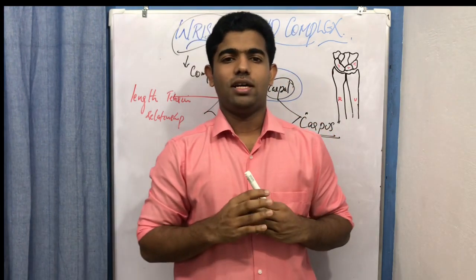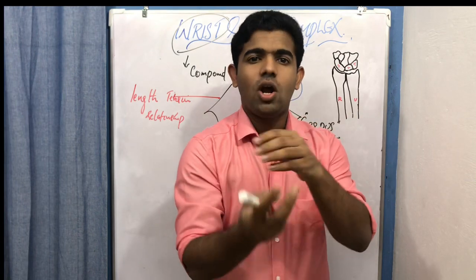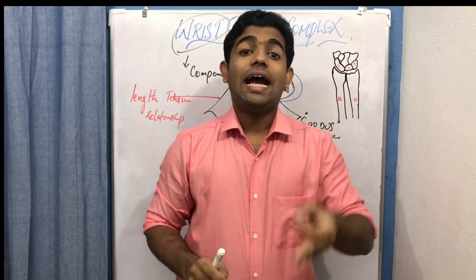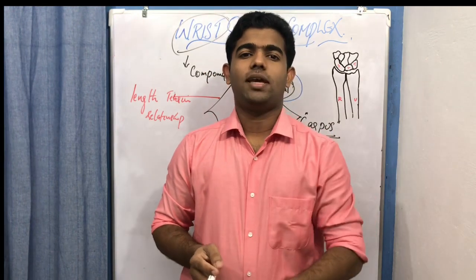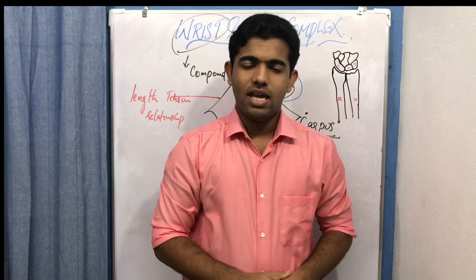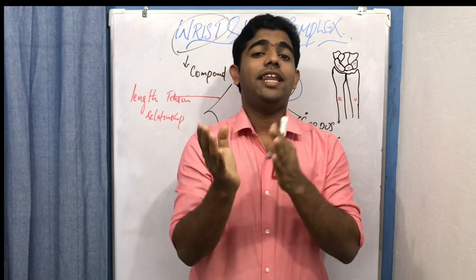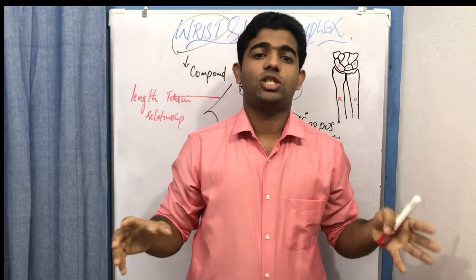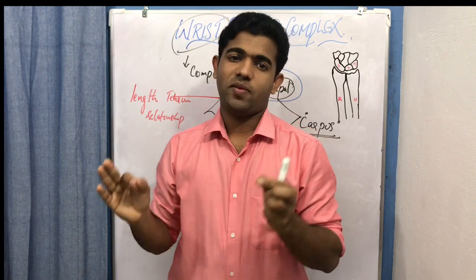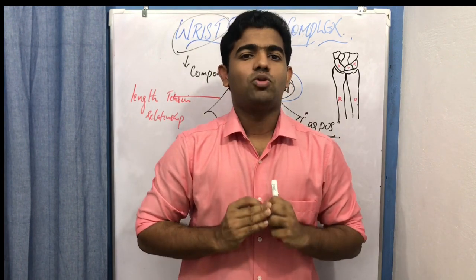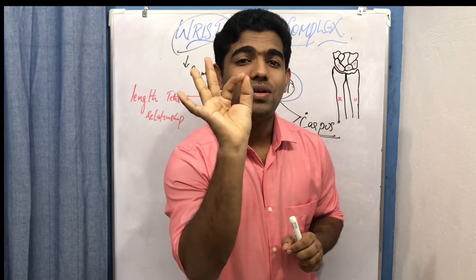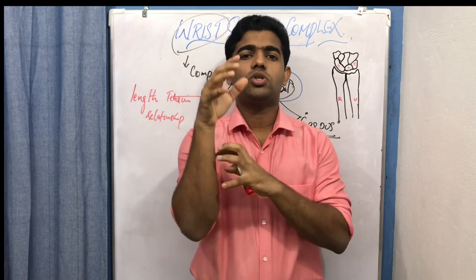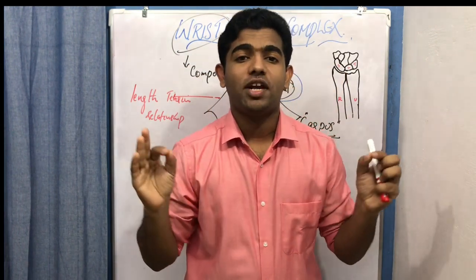This crucial role of maintaining the length-tension relationship cannot be done by the elbow, the shoulder, or even by the hand joints. That is why the wrist and hand complex is one of the most complex joints. You should always remember this complex joint varies in shape between different persons, and very simple minute changes in the wrist complex can produce a lot of functional imbalance in the hand complex, because of this maintenance of the length-tension relationship of forearm muscles.